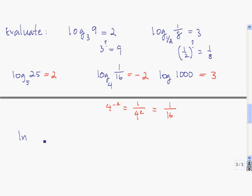Let me give you one more: the natural log of e to the negative 8 power. The answer is negative 8 — imagine a little e down there, and ask e raised to what power is e to the negative 8? Well, e to the negative 8 is e to the negative 8, so the natural log of e to the negative 8 is just negative 8. Another way to think of it is that you're applying a function and then its inverse, and a function followed by its inverse just gives you what you started with.